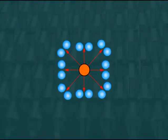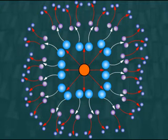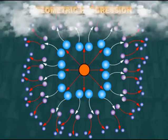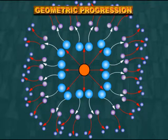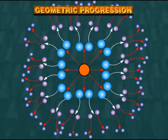Hi students, in this lecture we are going to study about the second kind of progressions, that is geometric progressions. We will cover what exactly geometric progressions are, how to find the nth term, how to calculate the sum of n terms of a GP, what happens when the number of terms becomes infinite, how to find the sum in that case, and also a special type known as the Arithmetico Geometric Series.